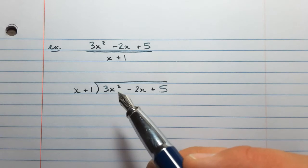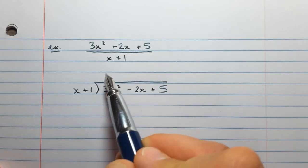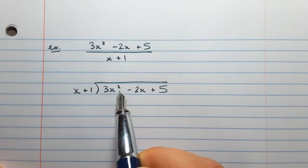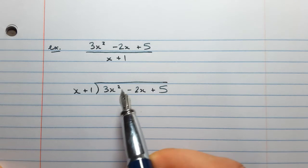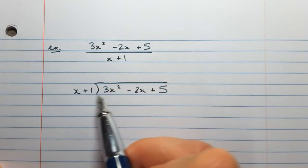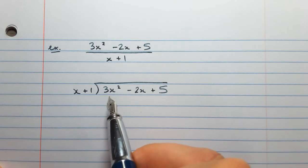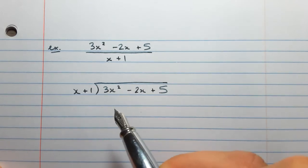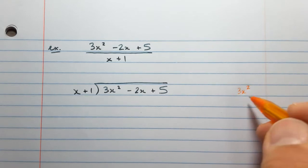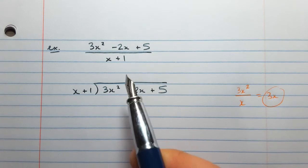The way we do this is we only worry about the highest degree term in the divisor. In this case, that's x. We don't really worry about the plus 1 when deciding what this portion of the quotient should be. I'm going to look at this highest degree term of the dividend, 3x squared, and the highest degree term here, x. How many times can I fit x into 3x squared? It would be x times 3x.